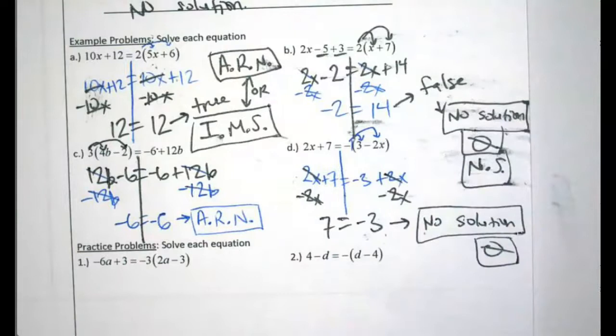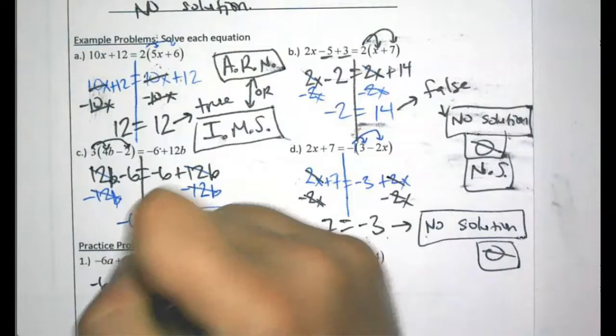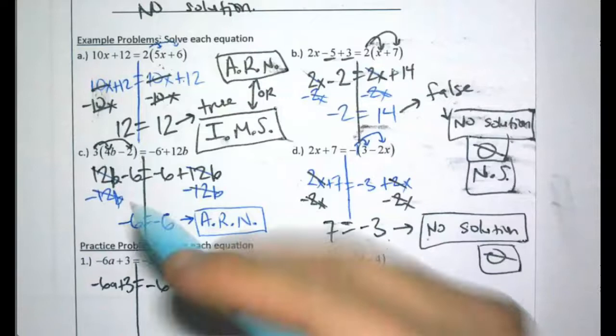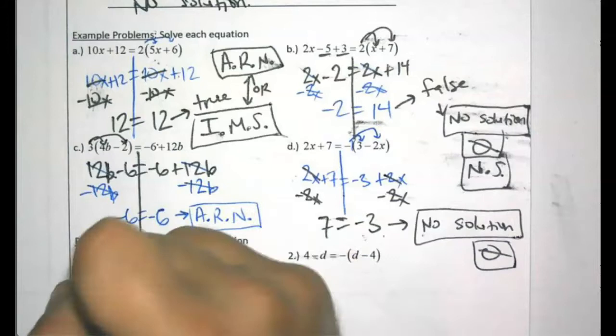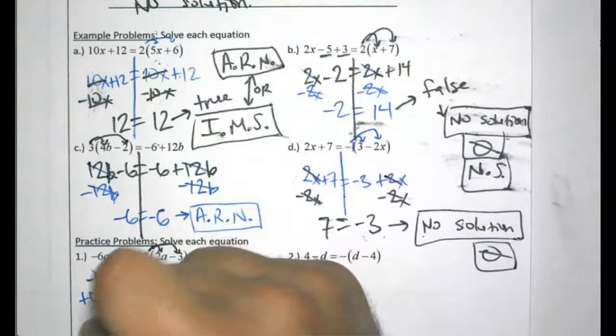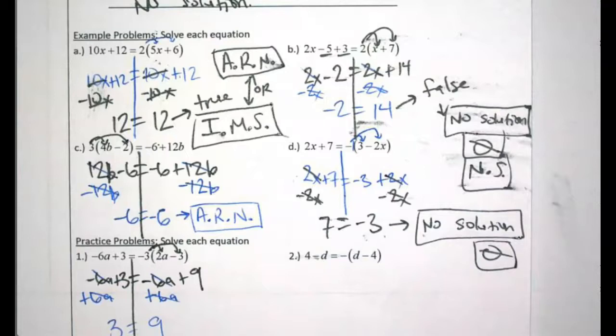Last two problems. Left side has no work to do; on the right side distribute negative 3: negative 3 times 2a is negative 6a, negative 3 times negative 3 is plus 9. I add 6a to move the variables to the same side — all variables zero out — and I'm left with 3 on the left and 9 on the right. Does 3 equal 9? No — that's false, so the answer is no solution.